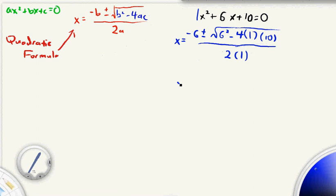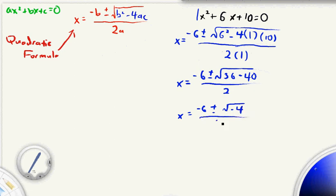And now we simplify so that we can solve it. So x equals negative 6 plus or minus the square root of 6 squared is 36 minus 4 times 1 is just 4, and 4 times 10 is 40. So we get that it's 36 minus 40 over 2 times 1, which is just 2.